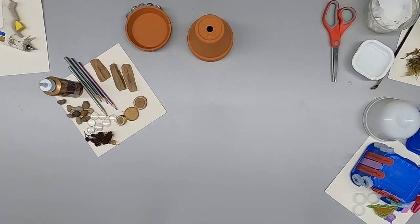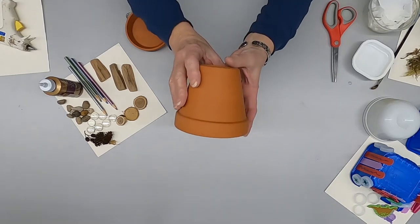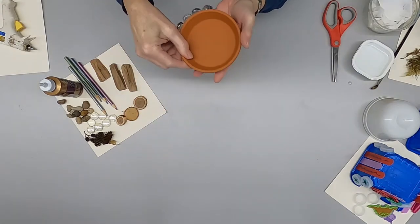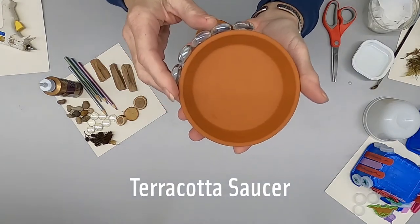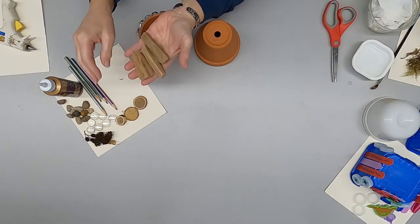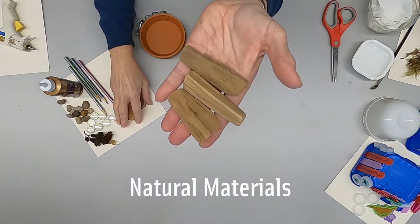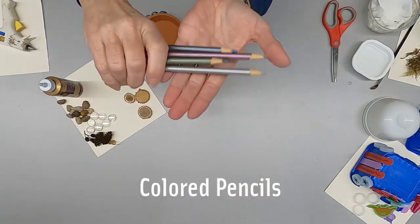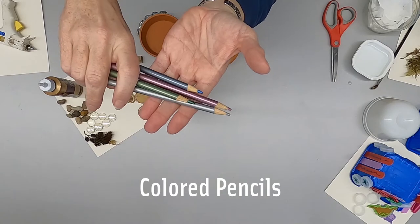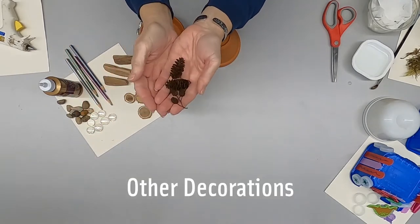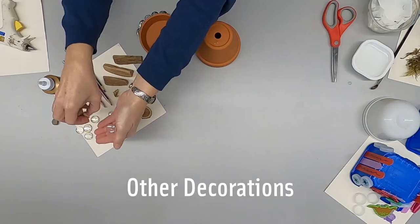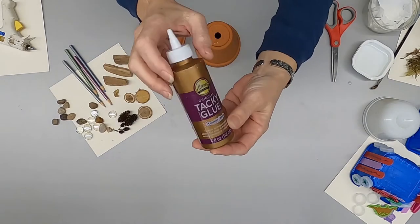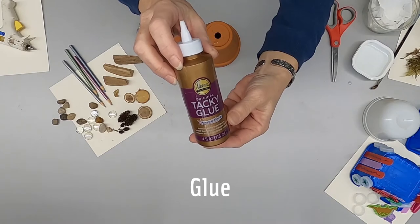Here are examples. For our first example, we're going to use a terra cotta pot. Any size will work. A terra cotta saucer is optional. A variety of natural materials, maybe pieces of wood or wood slices. Colored pencils or other kind of decorating. Maybe some pine cones or even some stones and glass stones. You'll need some type of glue or hot glue to attach them.